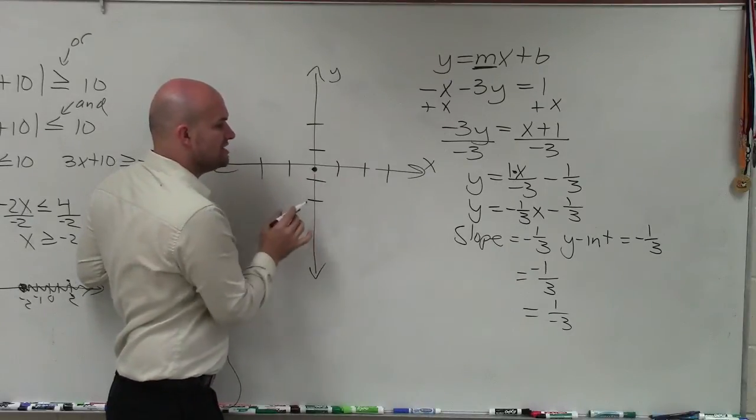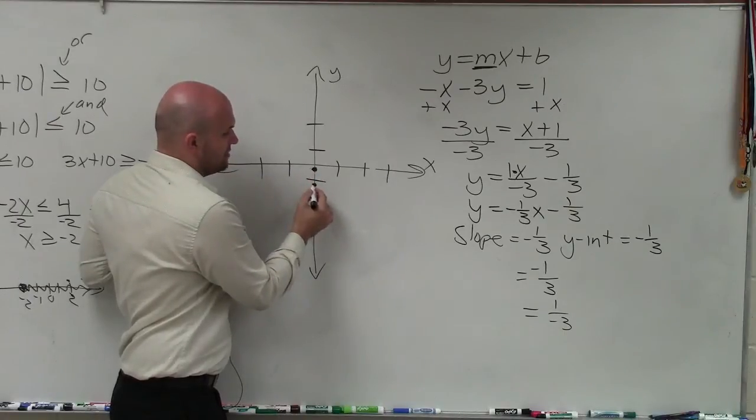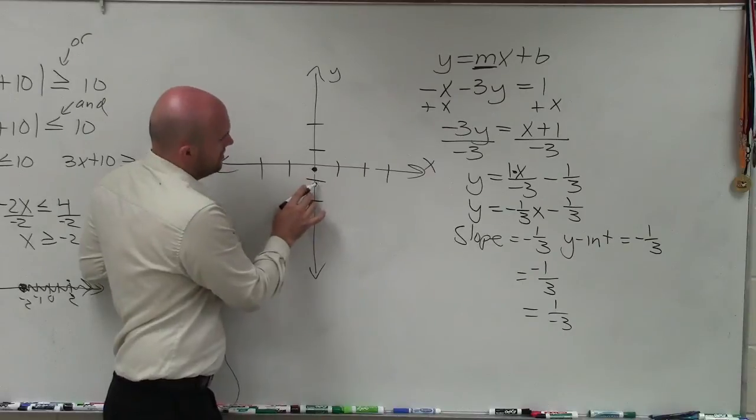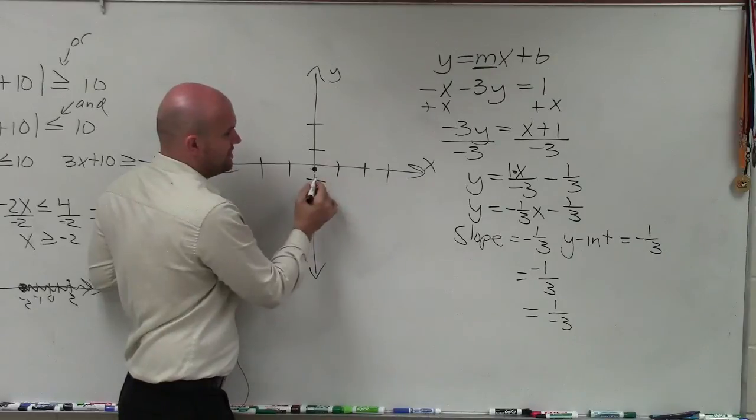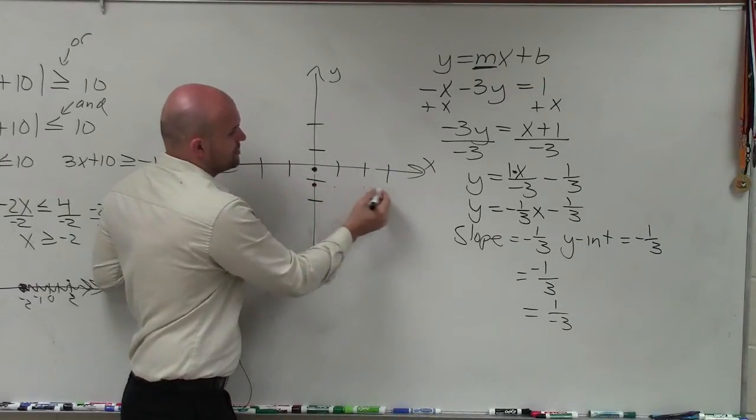If the change in the y values between any two points is negative 1, that means I need to go down negative 1. Therefore, I'm going to be 1 third past the next tick mark, which is going to be negative 1 and 1 third. Then to go over positive 3 units, because I already went down negative 1, now I need to go over 3 units. 1, 2, 3.